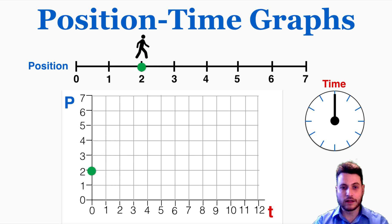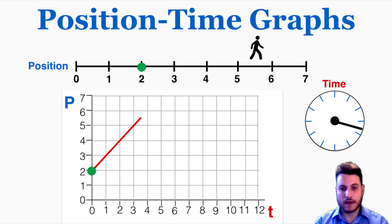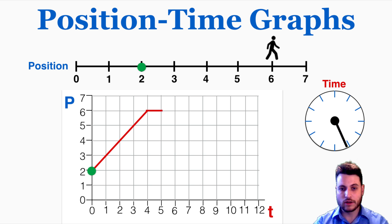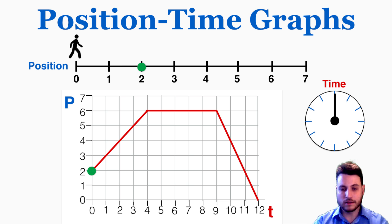Here's the answer — this is what it's going to look like. They're starting at a position of 2, so the y-intercept of the graph is going to be at 2. They then move up at 1 meter for every second that passes until they get to a position of 6, and they stop for 5 seconds, and then they move down at 2 units of position for every second until they're at a position of 0 at 12 seconds.